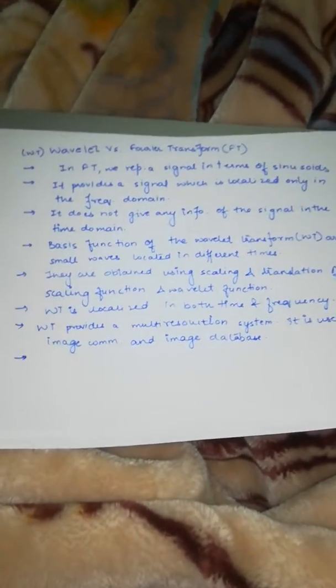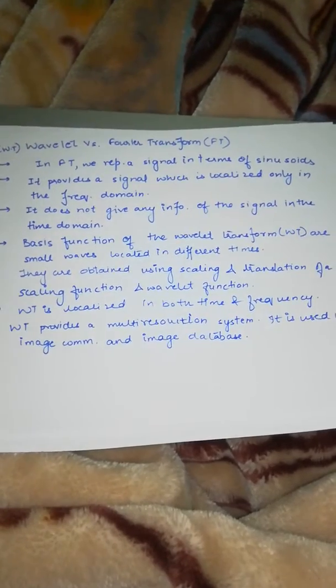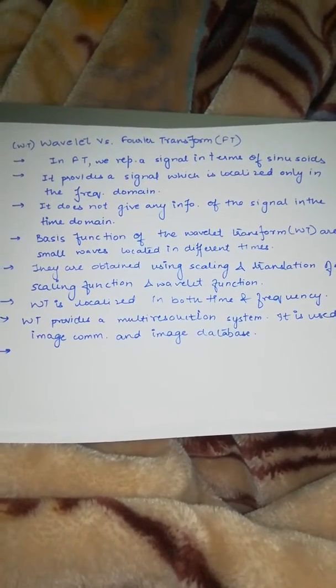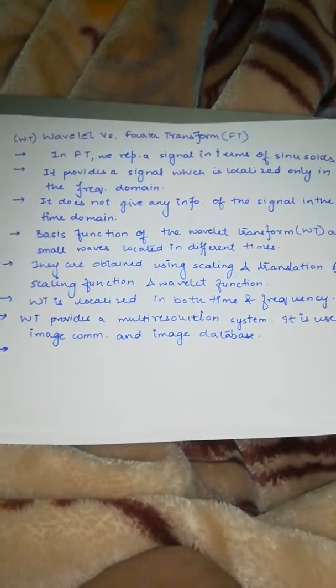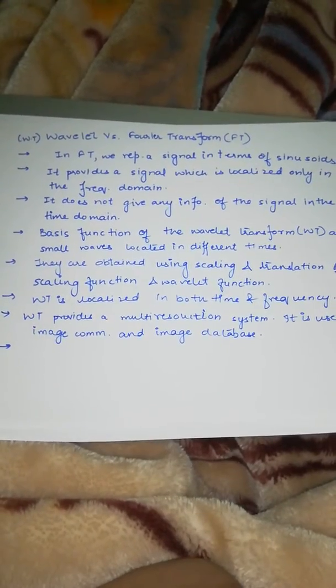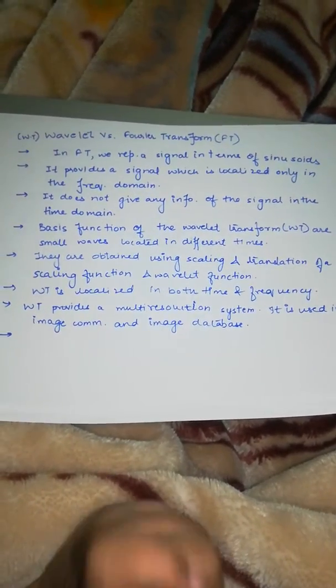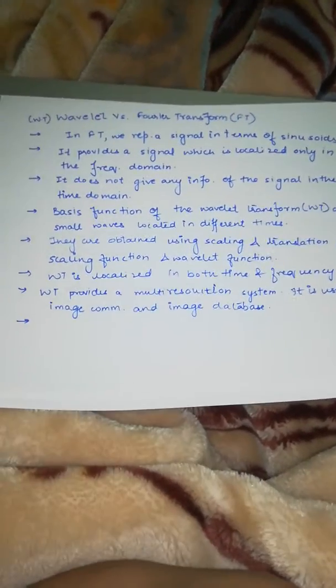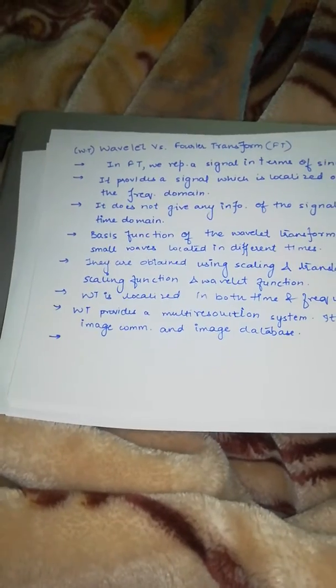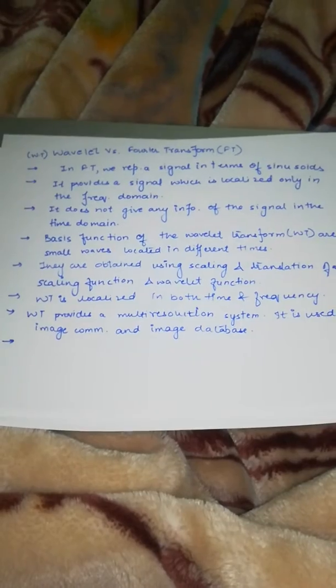With the wavelet transform, we need to have a little idea about the Fourier transform versus wavelet transform. Fourier transform represents a signal in terms of sinusoids. When your waves are represented in this form, then the signals are localized in the frequency domain. It does not give any information of the signal in the time domain. The Fourier transform is localized in your frequency domain, but the time domain is not localized.